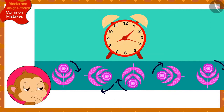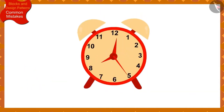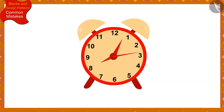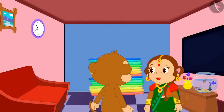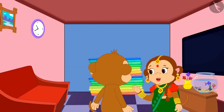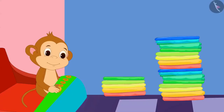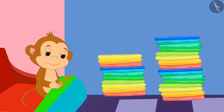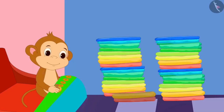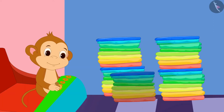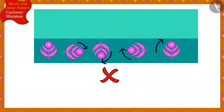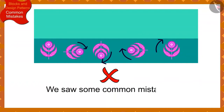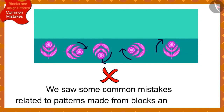Children, remember: whenever you want to know the clockwise direction, look at the direction of the movement of the needles in a clock. Banno explained Babban's mistake to him. Then Babban helped Banno create designs on a lot of sarees without making any further mistake. Children, in this video, we saw some common mistakes related to patterns made from blocks and design.